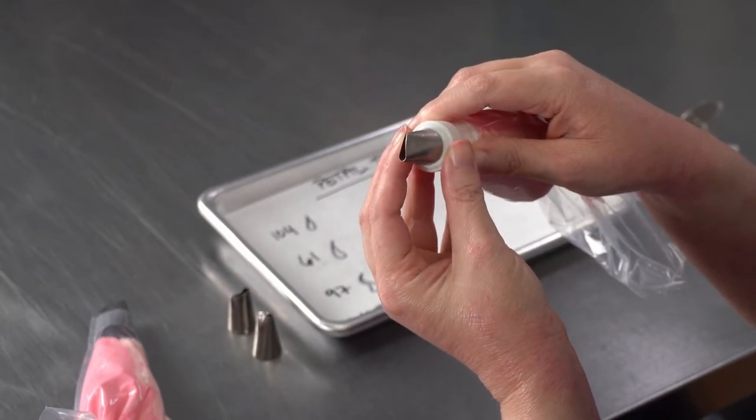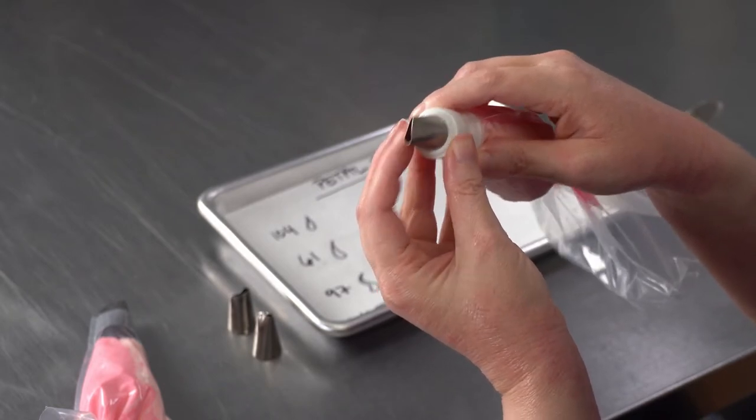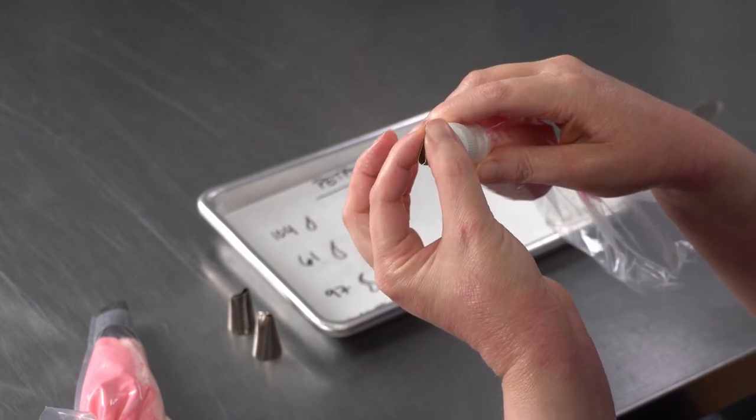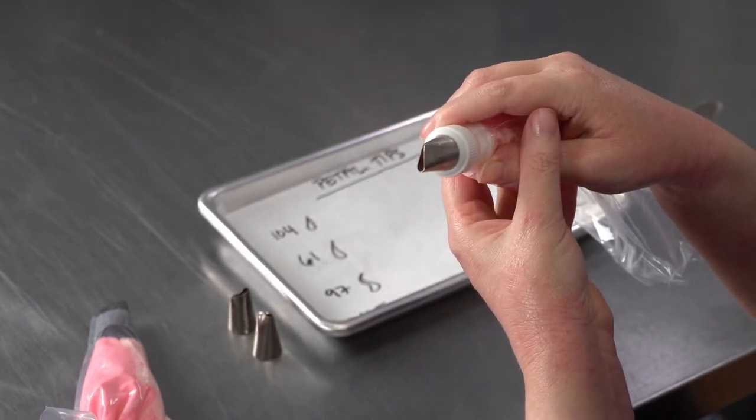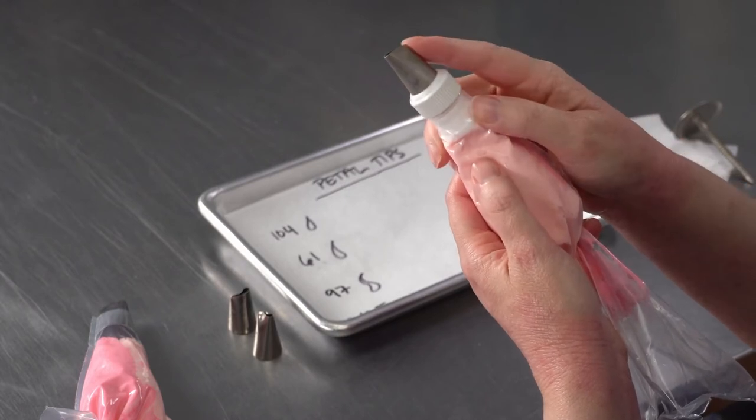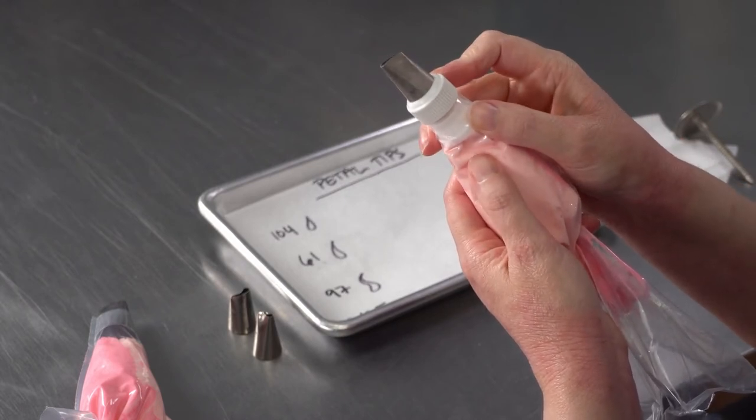There's a couple of different ways you can hold them and use them to make flowers. This one you'll see is just a nice straight teardrop-shaped opening, and it's a standard size tip. It's number 104, and I'm using it with a coupler.